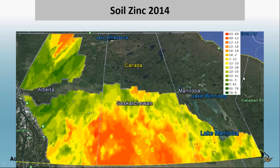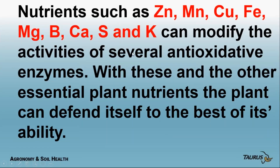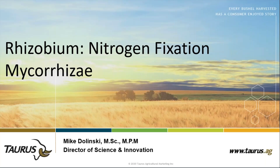Zinc deficiency is quite common — particularly a Saskatchewan and eastern Alberta issue. Nutrients such as zinc, manganese, copper, iron, magnesium, boron, calcium, sulfur, and potassium can modify the activities of several antioxidant enzymes. With these and other essential plant nutrients, the plant can defend itself to the best of its ability. Your challenge as a farmer is to provide that to the plant during the whole growing season.